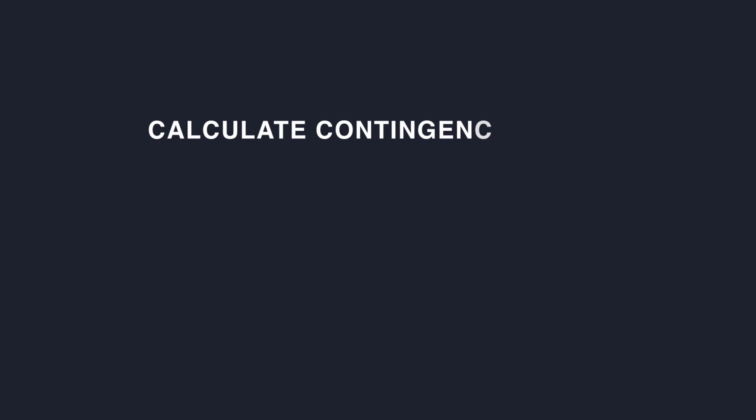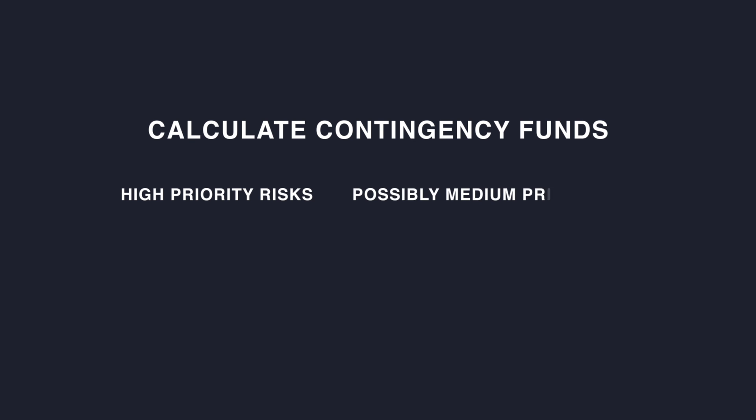Start with the high priority risks in your risk register. Based on the risk tolerance of the organization, your sponsor may guide you to only calculate contingency funds for the high priority risks, or they may also suggest some medium priority risks be included.